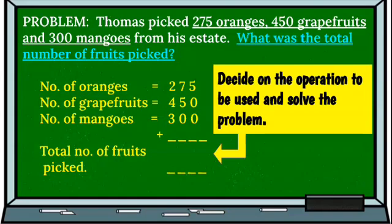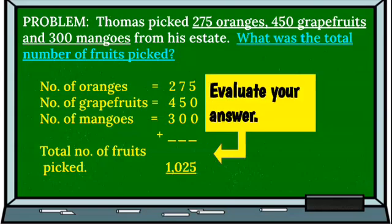'Total' is an indicator that we have to add. So let's add — when we add, we get 1,025 as the total number of fruits picked. Then we're going to evaluate our answer to make sure that it's correct.